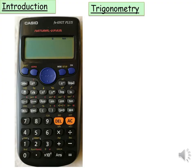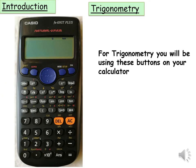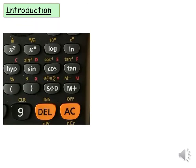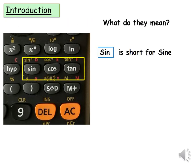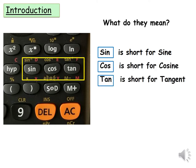All right trigonometry. For trigonometry you will be using these buttons on a calculator. These buttons are the sine, cos and tan. What do they mean? Sine is short for sine, cos is short for cosine and tan is short for tangent.